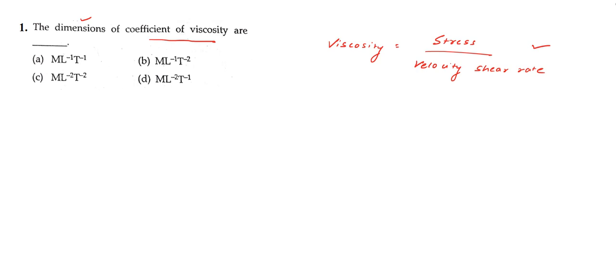If we represent it in terms of symbols, stress can be written as force divided by area, and velocity shear rate can be written as velocity divided by L. So this gives us the symbols for stress and velocity shear rate. Now we can find the dimensions of each one of them.